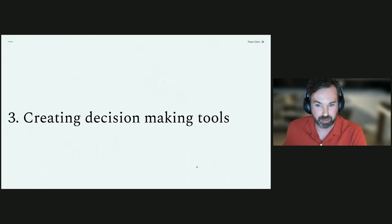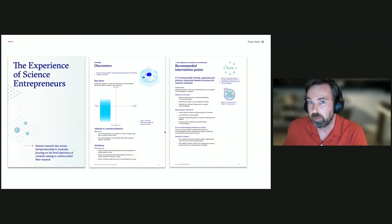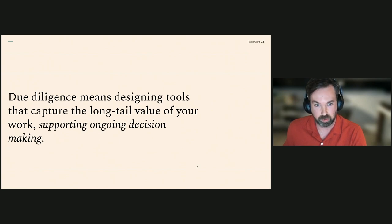Very last point, this is really quick Liz, but creating decision making tools. So this is the third aspect of doing due diligence. We put a lot of effort into doing this research and design work well. And a part of what we think doing that well means is to create tools that can be reused for different types of decisions later on. We had particular priorities and identified particular leverage points in this project, but we put quite a lot of effort into making these systems maps and reports available to the wider ecosystem of actors so that they could make their own decisions about how they wanted to intervene and contribute to the systems change that is necessary. So the last point, due diligence means designing tools that capture the long tail value of your work and making that available to people where possible, so that you can support ongoing decision making, not just for yourself, but through the ecosystem itself.